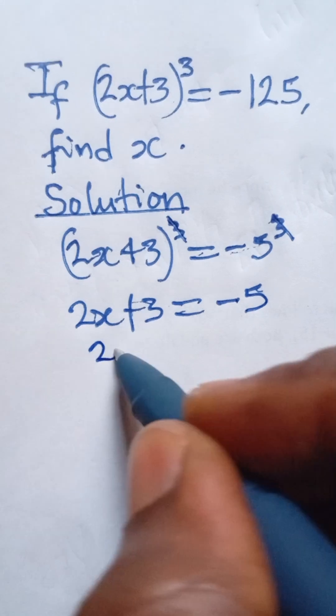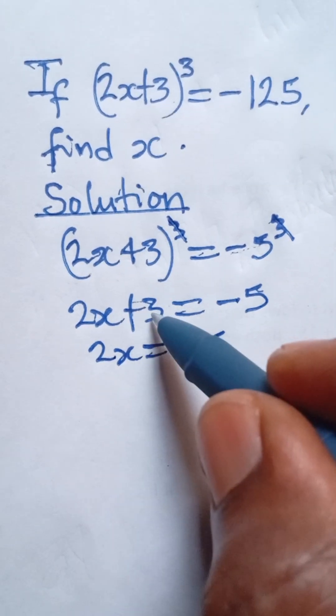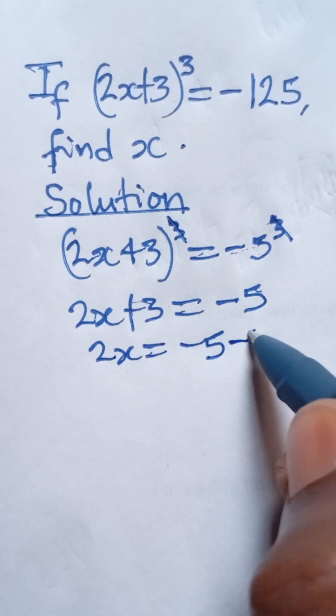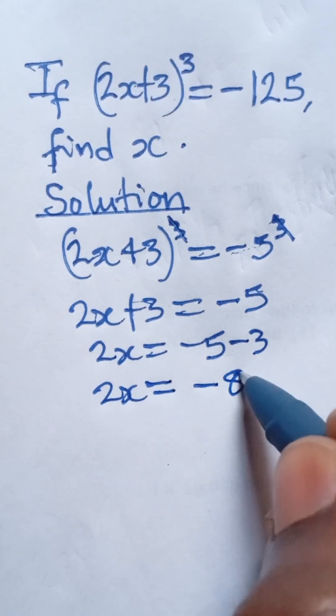And from there, we can collect like terms and say 2x is equal to negative 5. When this positive 3 goes to that side, it becomes negative 3. So, 2x is equal to negative 8.